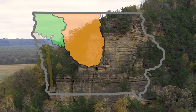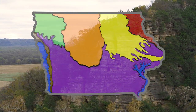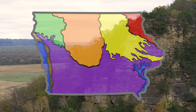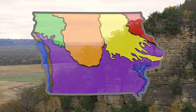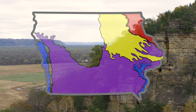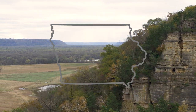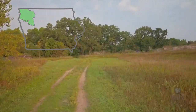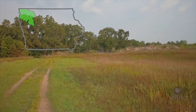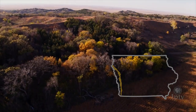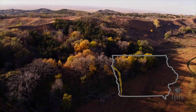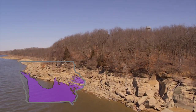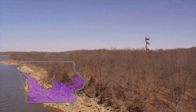Iowa is divided into seven main landform regions. Each landform has a unique geologic history that shapes the way it looks. The Des Moines Lobe in the north central part of the state, the northwest Iowa Plains, the Loess Hills region in western Iowa, the southern Iowa Drift Plains in the central third of the state.